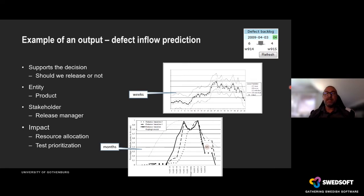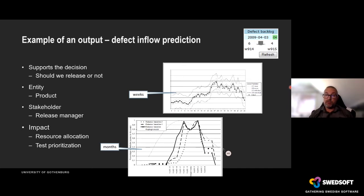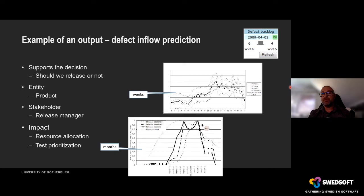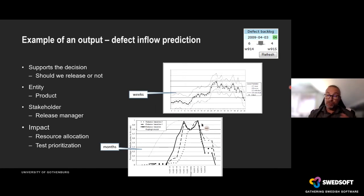At the beginning, we were predicting product performance in terms of number of reported defects during development. When we showed these predictions to system owners and product managers, they took those predictions and reprioritized their testing resources to address a second peak. What happened was that the predictions were really bad — not because we were wrong mathematically, but because the organizations managed to act upon that data and do something about it.